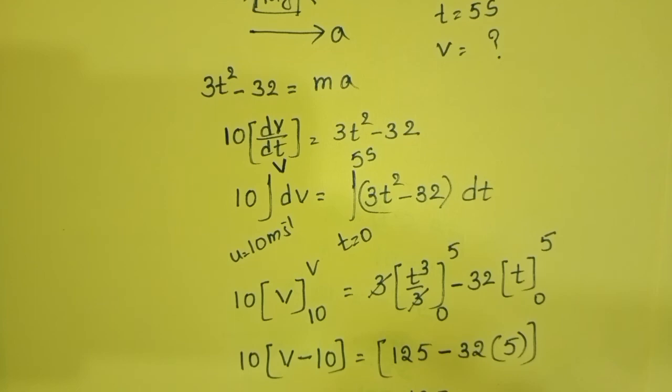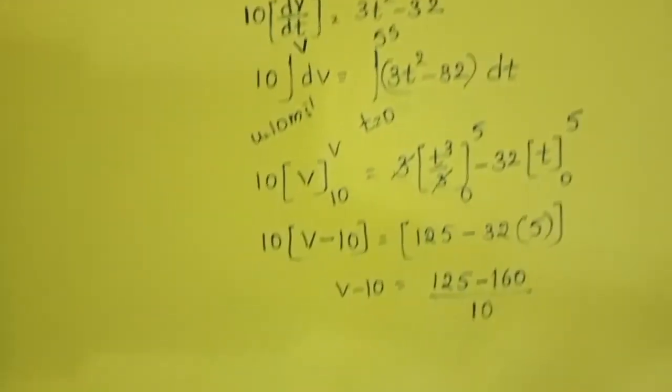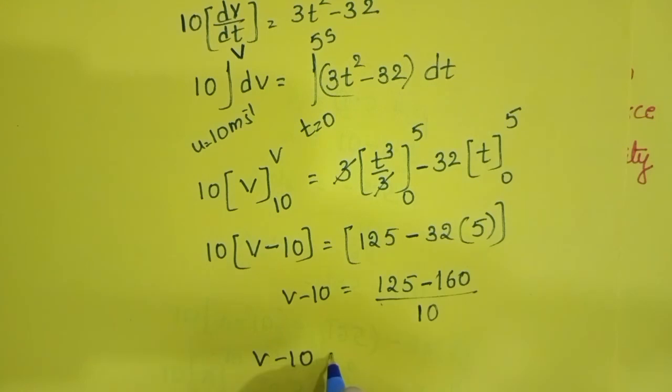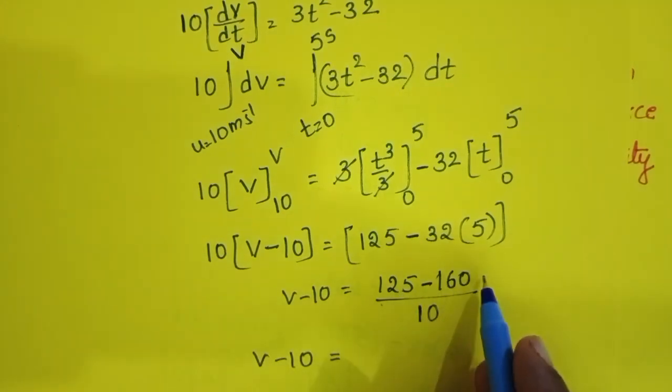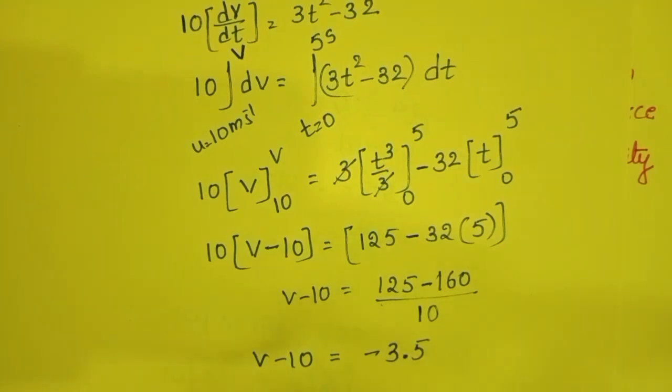125 minus 160 gives v - 10 = -35/10 = -3.5. Then v equals 10 minus 3.5.